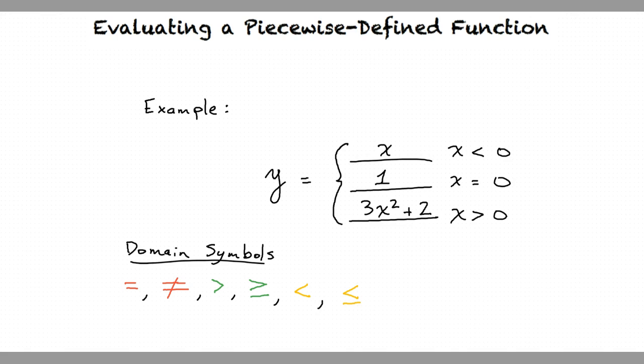Where there is any kind of equal sign, the boundary number is included in the function. Where there is not, such as greater than or less than without the equal sign, the boundary number is not included. Let's look at an example to better explain this.